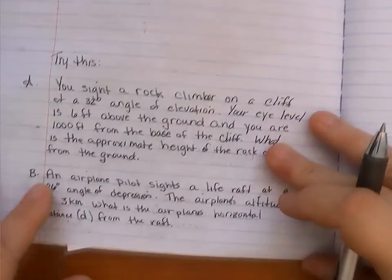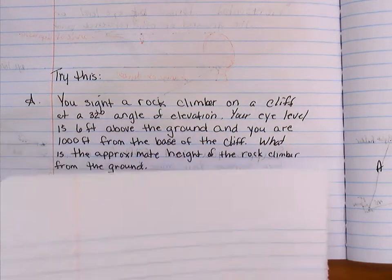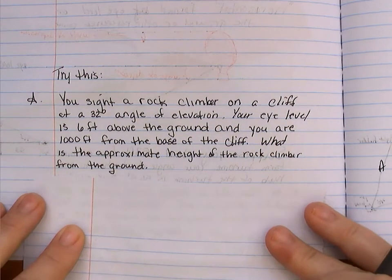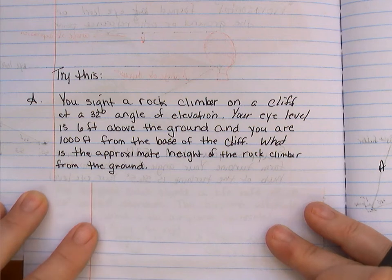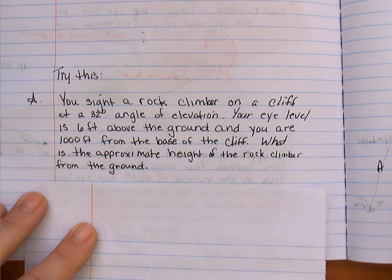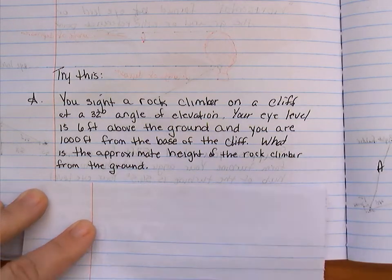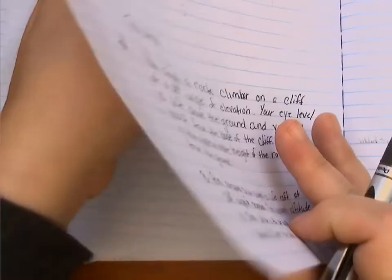Okay. I wanted to give question A right here a try. You sight a rock climber on a cliff at 32 degree angle of elevation. Your eye level is 6 feet above the ground and you are 1,000 feet from the base of the cliff. What is the approximate height of the rock climber from the ground? Figure that out. Pause and come back.